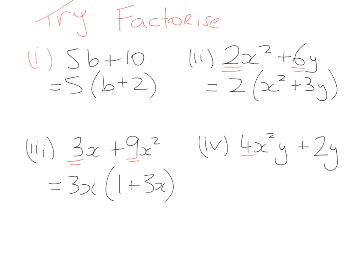Final question: the common factor between 4 and 2 is 2, and both terms have y in common, so we put 2y on the outside. Inside: 2y times what gives me 4x²y? Well 2 × 2 = 4, the y is already accounted for, so we just add x². That gives us 2x². So the answer is 2y(2x² + 1).